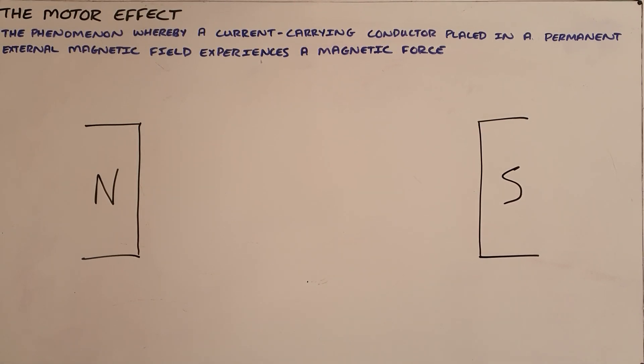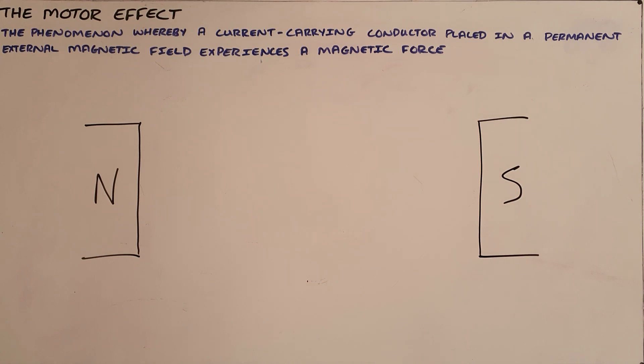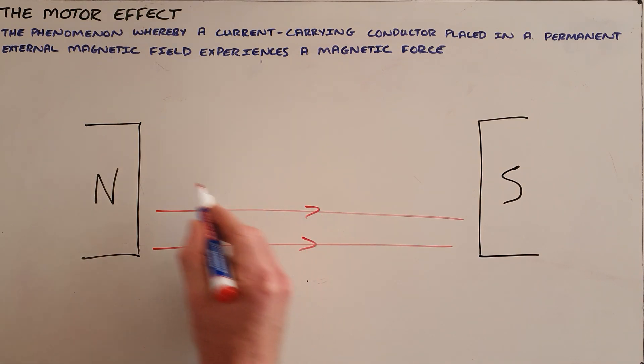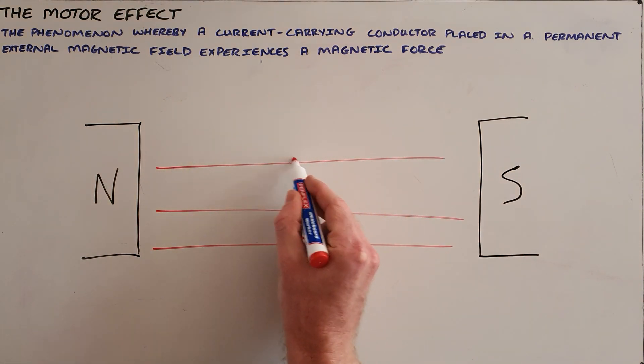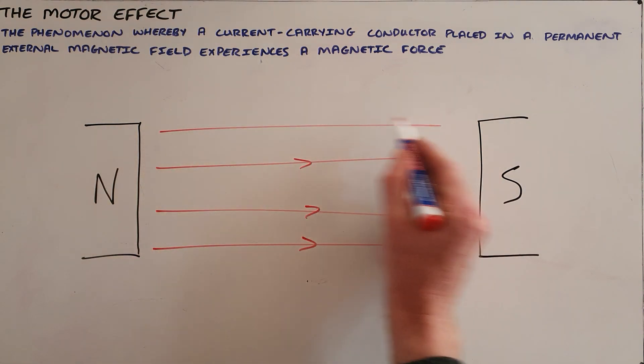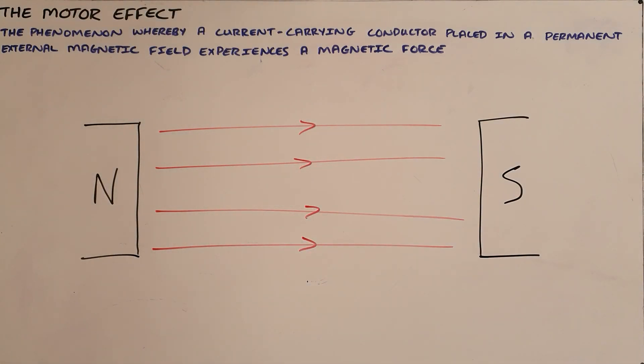The motor effect is the phenomenon whereby a current carrying conductor placed in a permanent external magnetic field experiences a magnetic force. We know that a magnetic field or the magnetic field lines are always directed from north to south, and so we can draw those in.